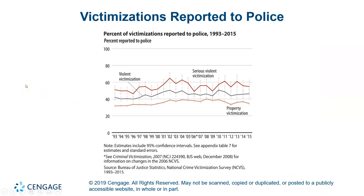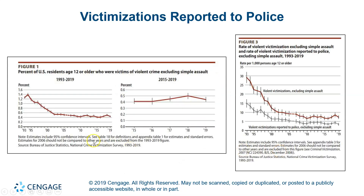There's a chart showing the percent of victimizations reported to police from 1993 to 2015, covering violent victimization, property, and serious crime. You can also see the percentage of U.S. residents age 12 or older who were victims of violent crime, excluding simple assault. You can kind of look at the trends.